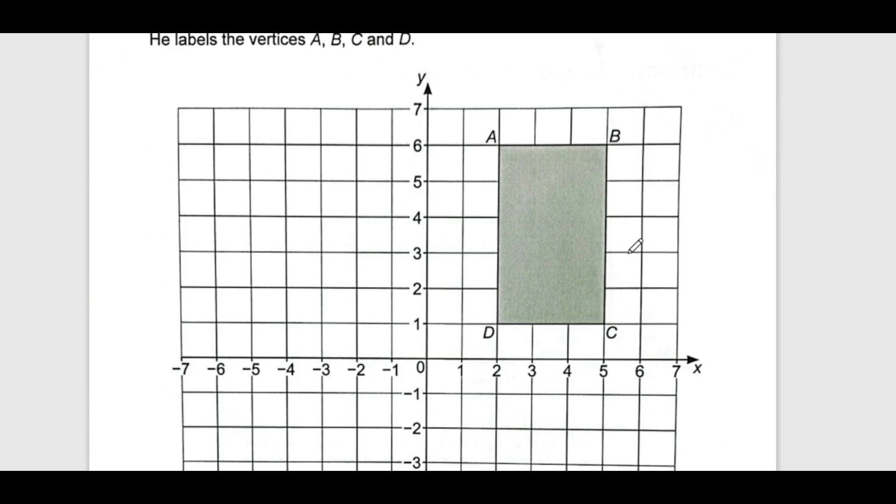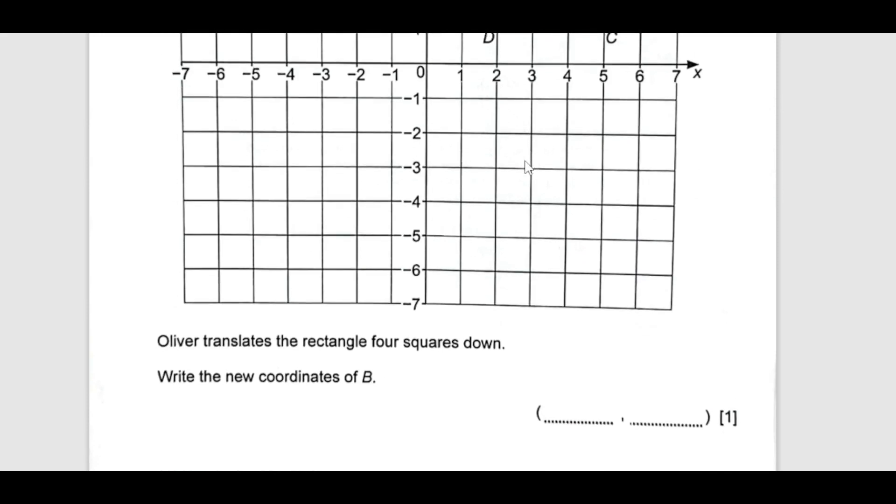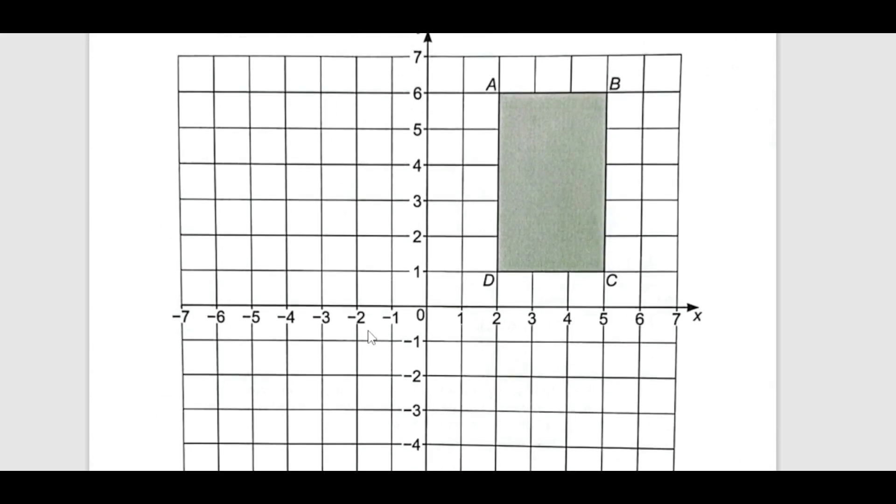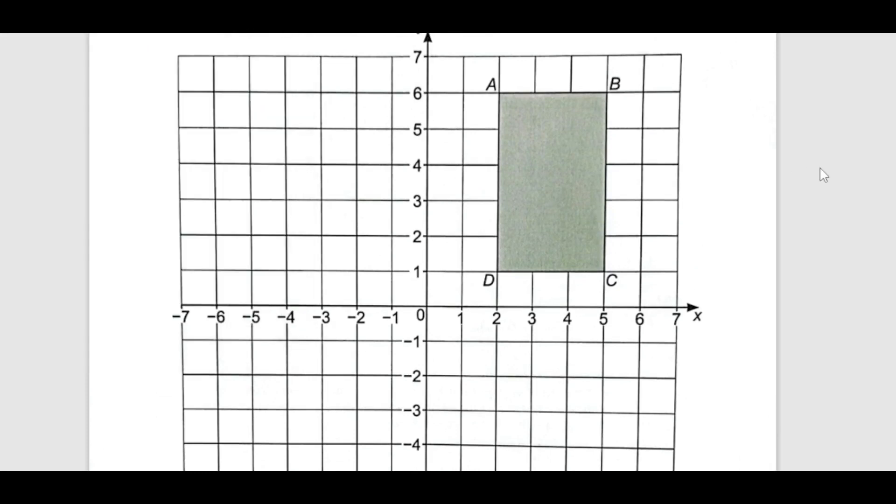The first question we have here, Olivier draws a rectangle on a coordinate grid. He labeled the vertices as ABCD. You can see ABCD here. The question is Olivier translates the rectangle four squares down. So, four squares down. We are going to write the new coordinates of point B. There is no need actually to draw. We are just going to actually write the new coordinates of B.